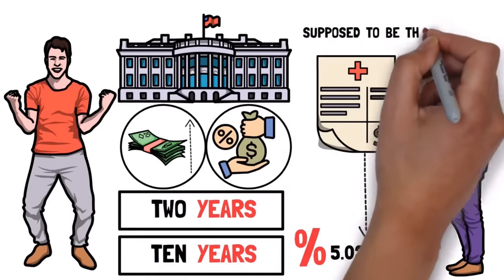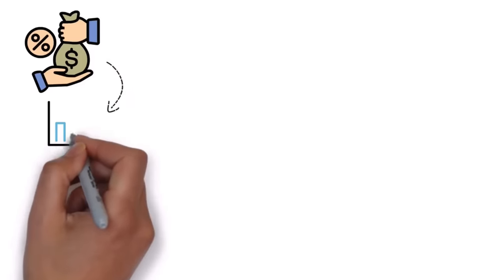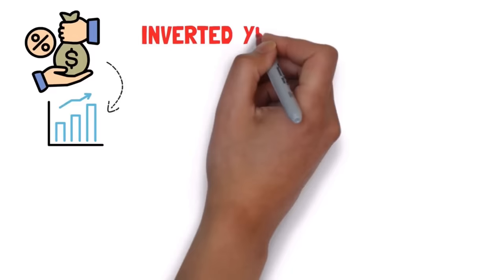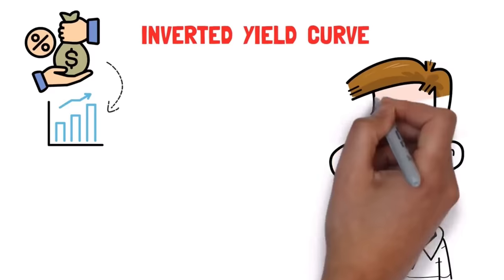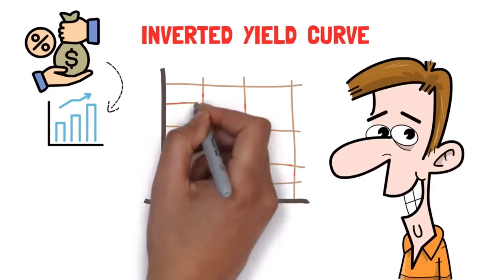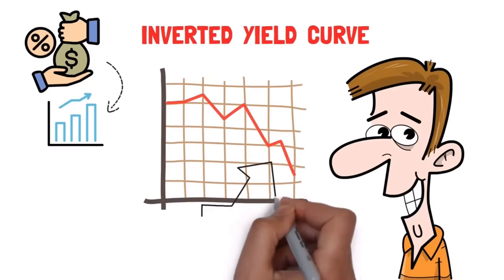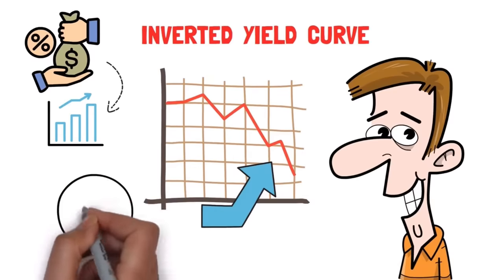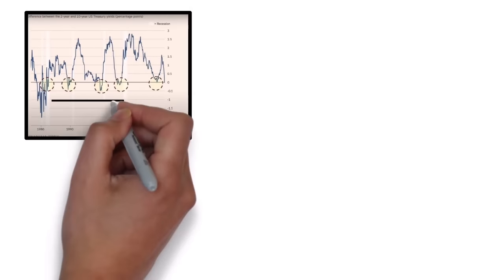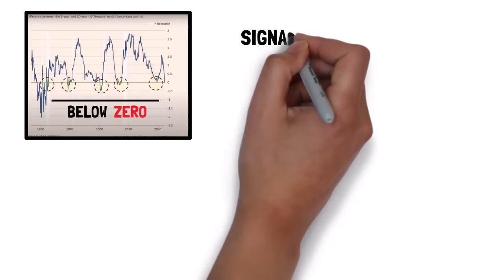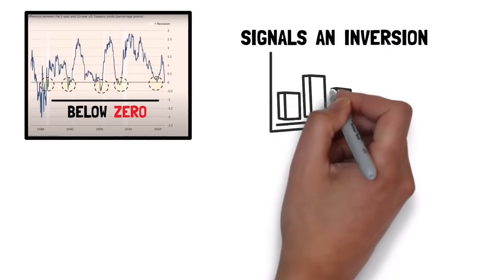Typically, it's supposed to be the opposite, meaning that the longer you let the government borrow, the higher the rate is supposed to be. When the rates are inverted like this, you get something called an inverted yield curve. Long story short, inverted yield curves are the most obvious signal for a recession. When a situation like this happens, the chances of a recession are nearly 100%. If you look at this chart going back to the late 70s, every single time the line went below zero, which signals an inversion, what followed was a recession.